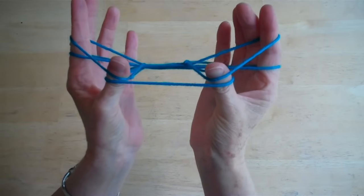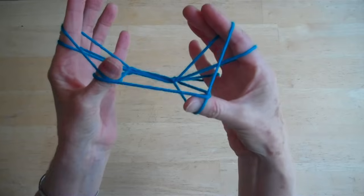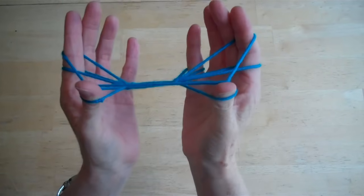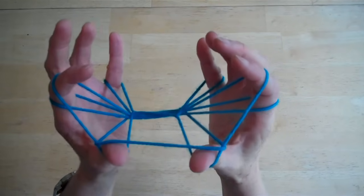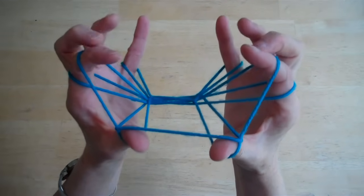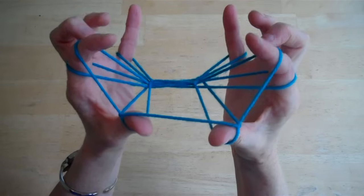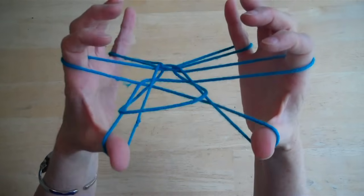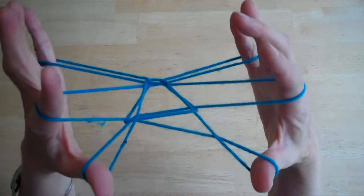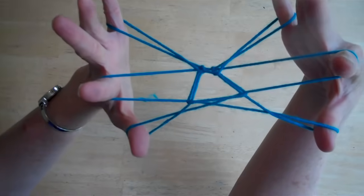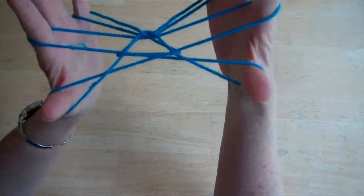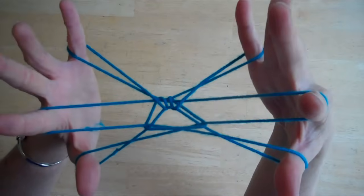You're going to take the bottom string and lift it over your thumbs. Just like we do on cup and saucer. Now you're going to take this top string that's on your pointer and you're going to drop it. Sort of adjust everything a little bit. It should look like this. You don't want to lose what you've got on your thumbs here.